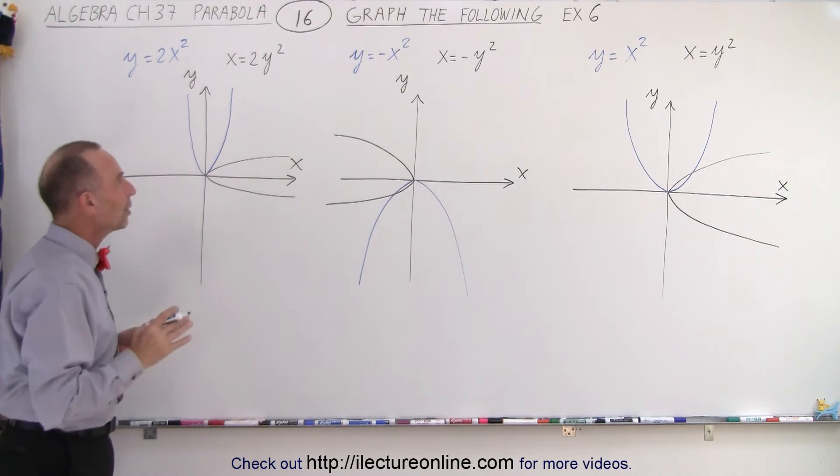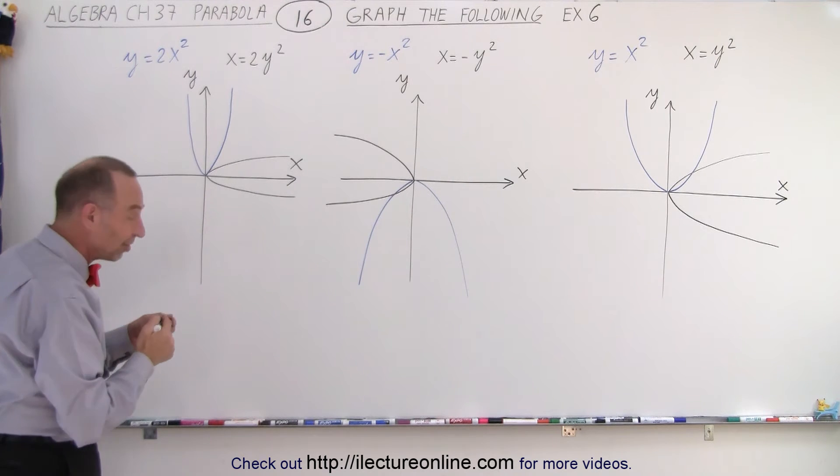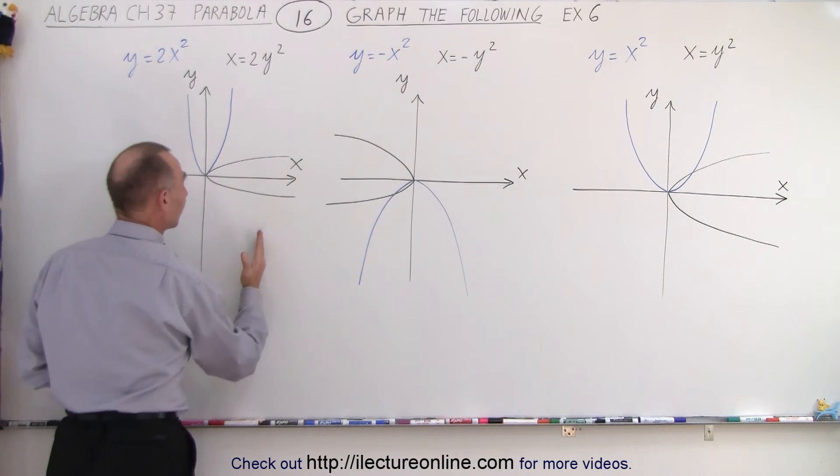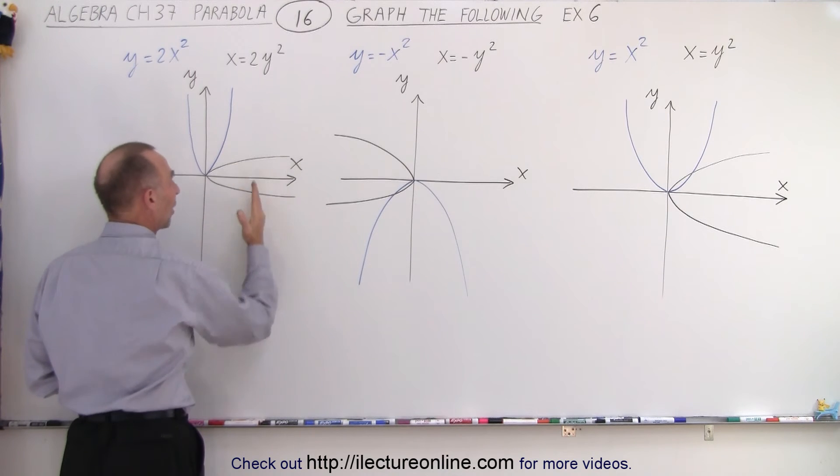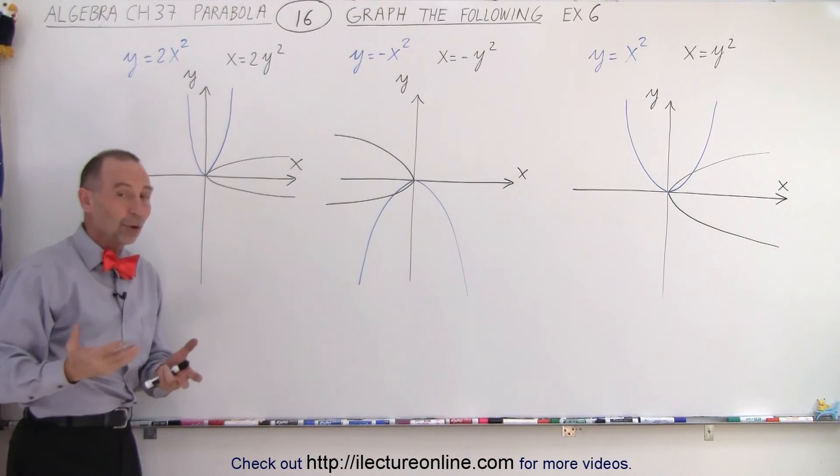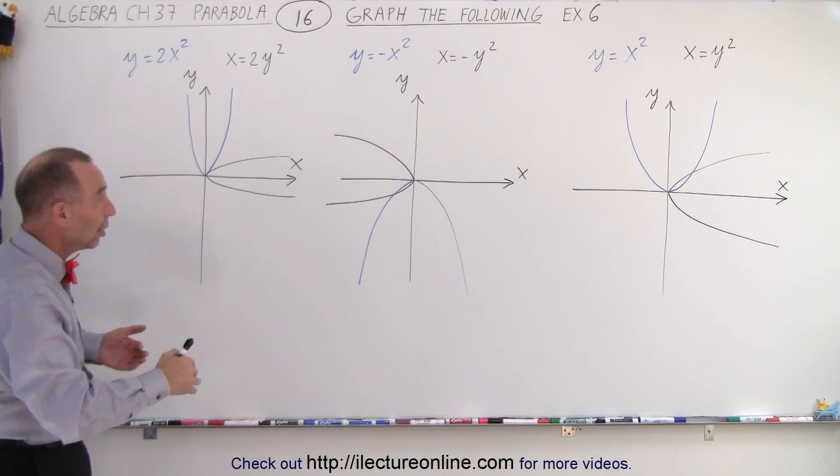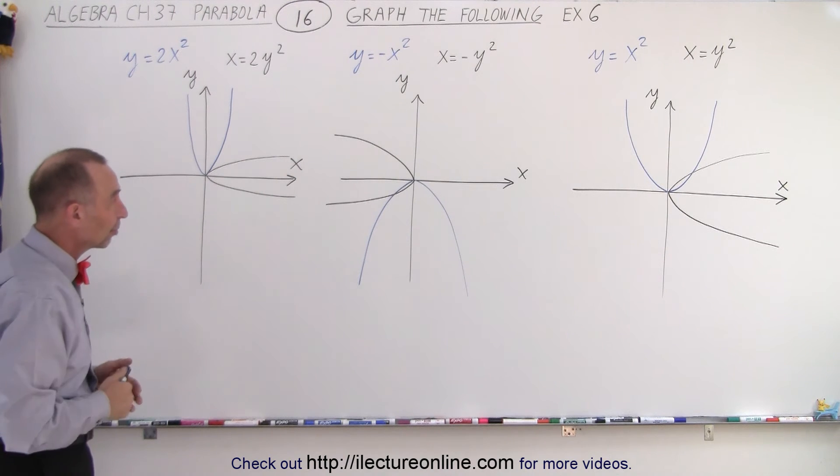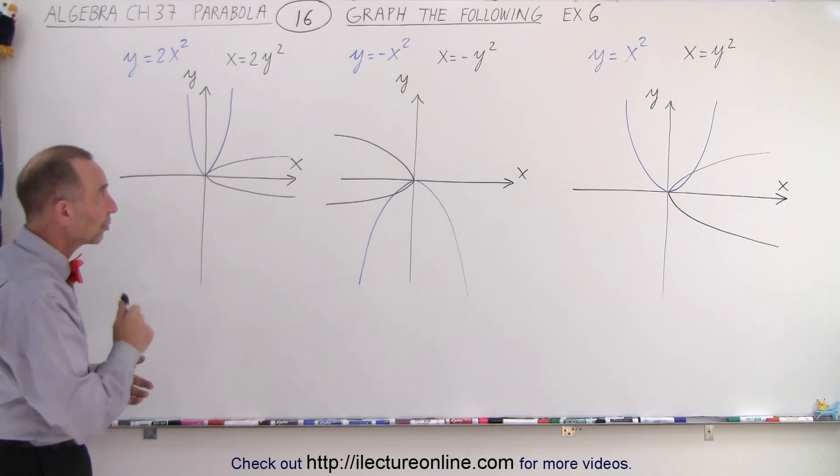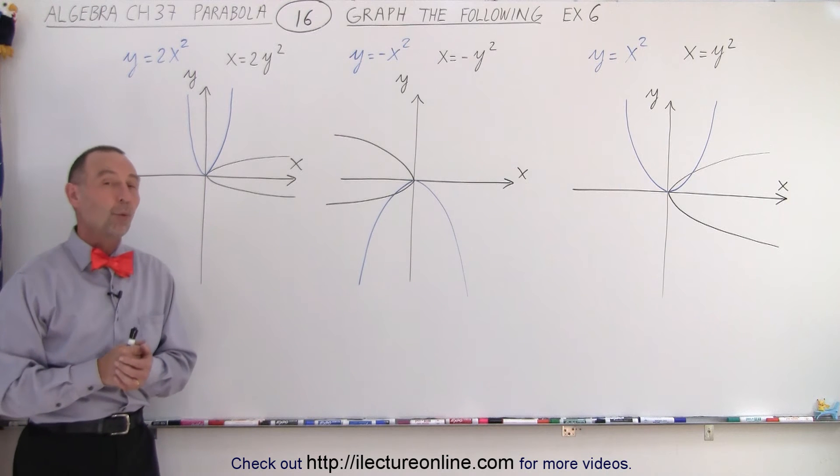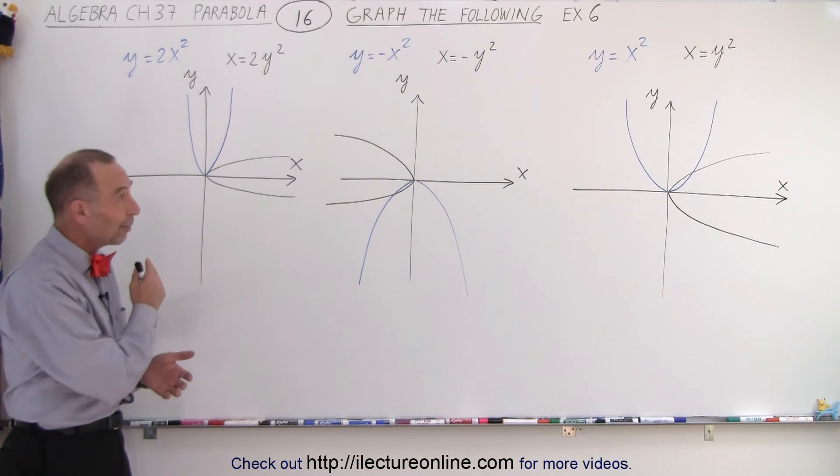So that's how we graph these relations. They're not functions anymore because notice if I draw a vertical line, it crosses the graph twice, which makes it no longer a function. But again, we should know how to graph them, and there are some simplistic examples of how to graph x as a function of y squared. And that is how it's done.